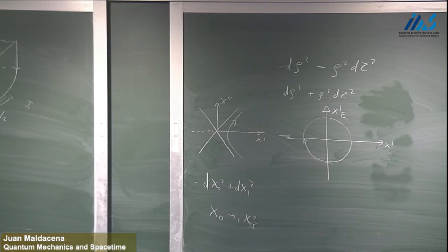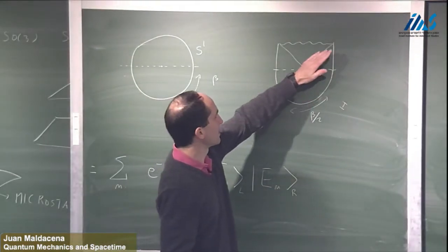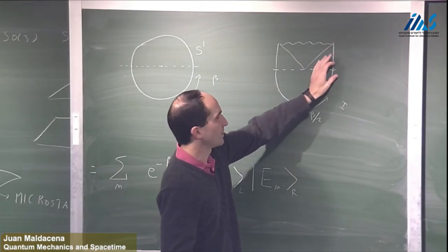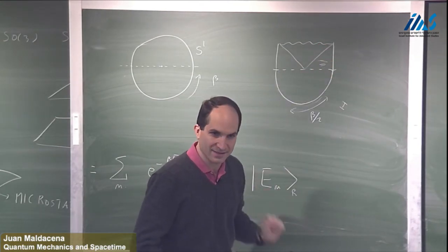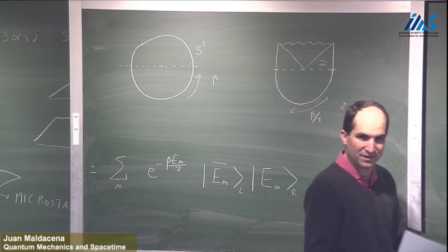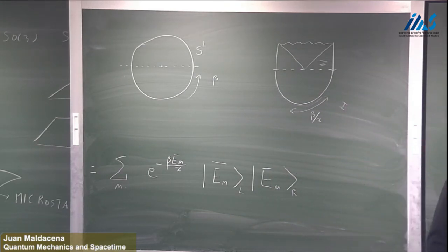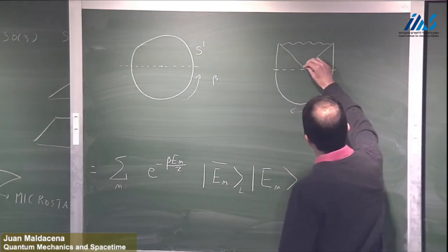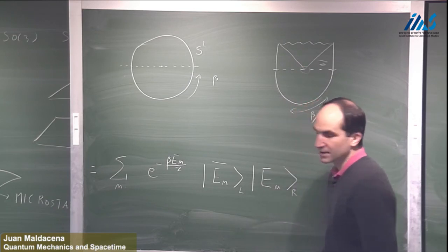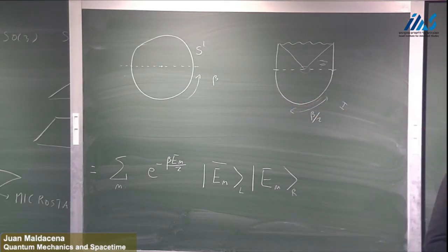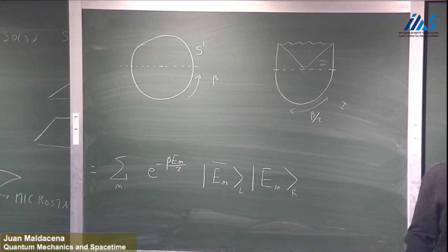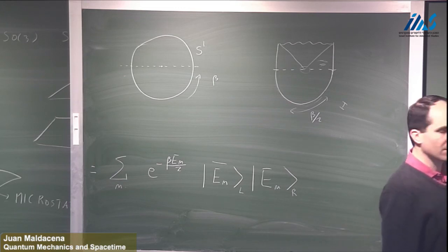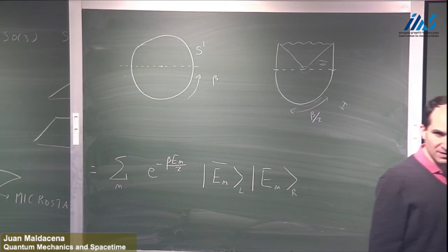Looking at the outside geometry, it looks like a black hole in thermal equilibrium with a thermal atmosphere outside. At the horizon or near-horizon geometry, it looks perfectly smooth — locally like the geometry of flat space in the Minkowski vacuum, for the same reason that the Euclidean continuation was producing the Minkowski vacuum locally.